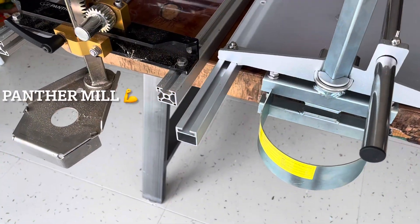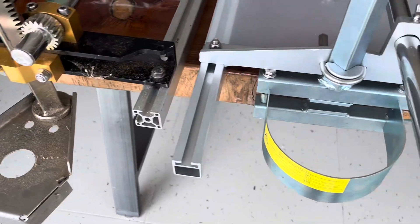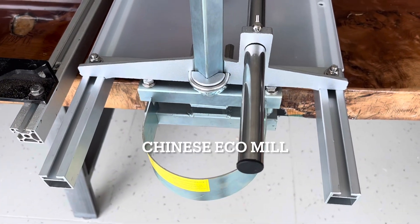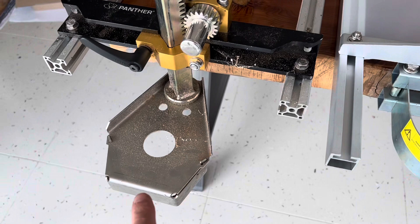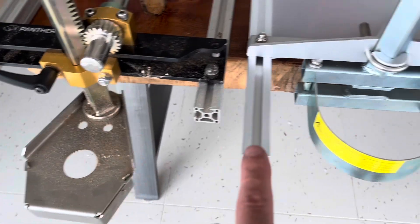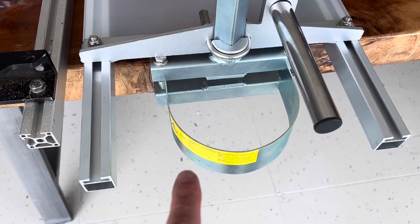We're going to look at the Panther mill side by side with your typical Chinese Chelaskan type mill. This is the Panther mill and this is the Chinese type version.